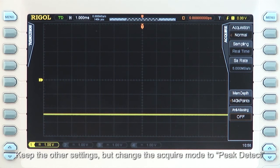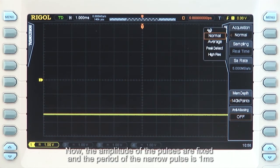Keep the other settings, but change the acquire mode to peak detect. Now the amplitude of the pulses are fixed and the period of the narrow pulse is 1 millisecond.